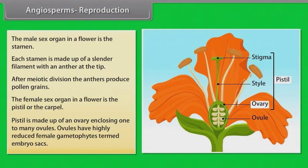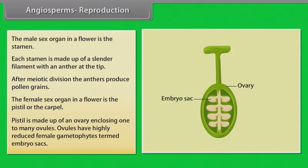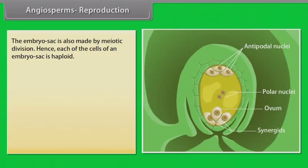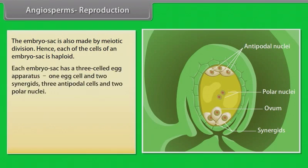Pistil is made up of an ovary enclosing one to many ovules. Ovules have highly reduced female gametophytes termed embryo sacs. The embryo sac is also made by meiotic division, hence each of the cells of an embryo sac is haploid. Each embryo sac has a three-celled egg apparatus with one egg cell and two synergids, three antipodal cells, and two polar nuclei.